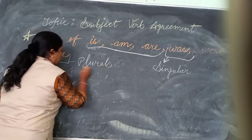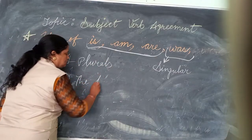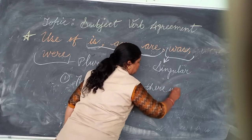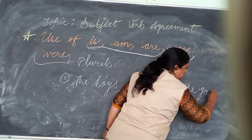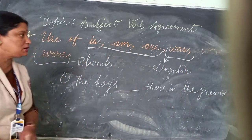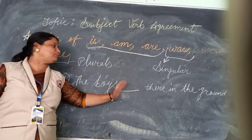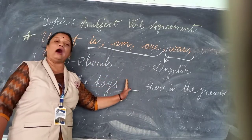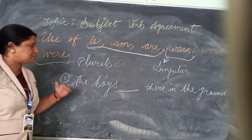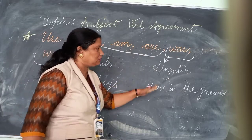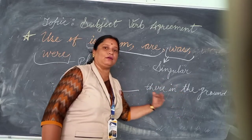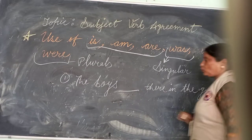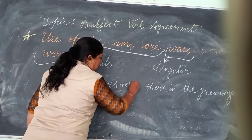Now here, 'the boys ___ in the ground.' There is no indication of past here. If it is given that we use was and were, then obviously we will use: the boys were in the ground. But if there is no indication of present or past, you can write are or were. And if it is given: 'the boys ___ in the ground yesterday,' then you have to use were, because yesterday indicates past tense.